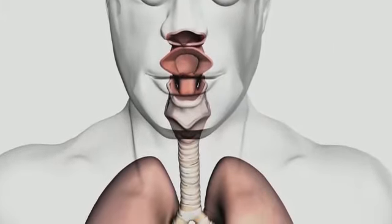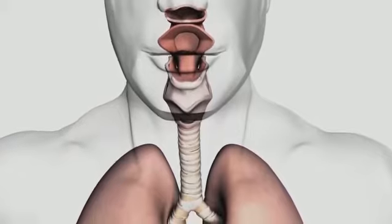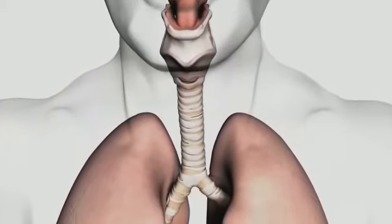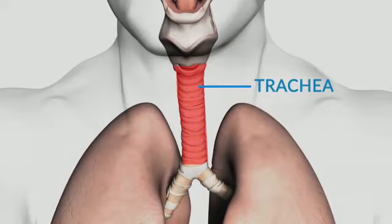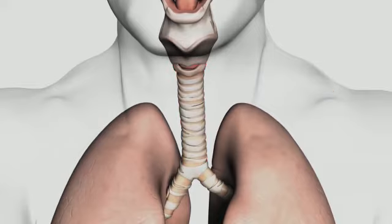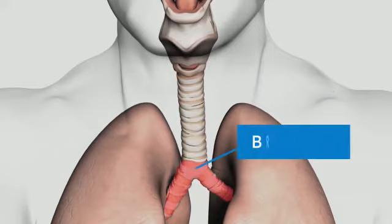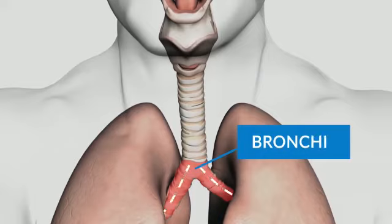From the larynx, air enters into a structure called the trachea, which is also called the windpipe. From the trachea, the air enters into the bronchi. The end of the trachea is divided into two bronchi, where each one leads into a lung.